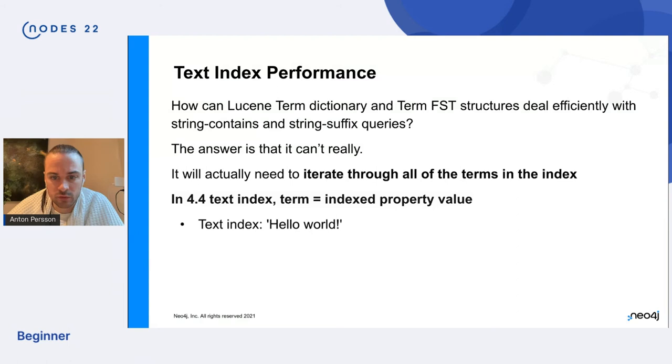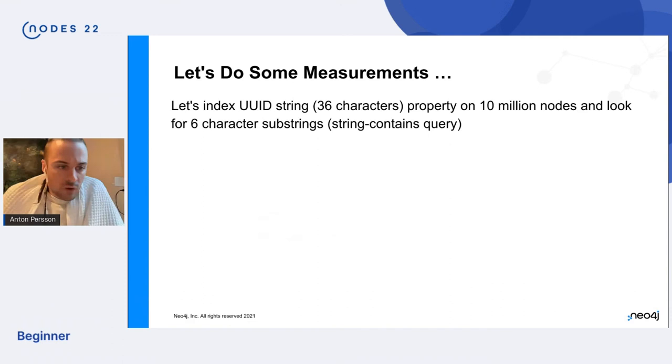We actually have to iterate through all of the terms in the index. So this is still in four four space now. Okay. And remember that in four four, the text index uses the complete property value as the term. So we kept the hello world and we kept the string as it is, right? So this is going to be one of the terms.